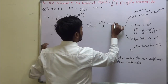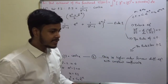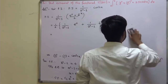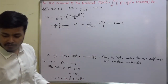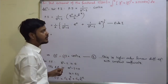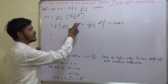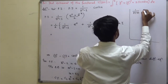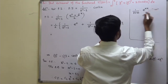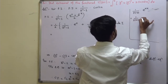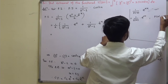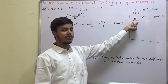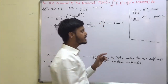Rule 1 states: 1/f(D) times e^(ax) equals 1/f(a) times e^(ax), provided f(a) is not equal to zero. So we substitute D equal to the coefficient of x. If f(a) is not zero, that is the particular integral.